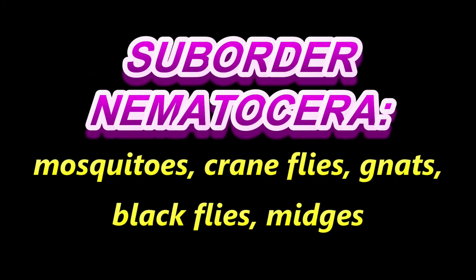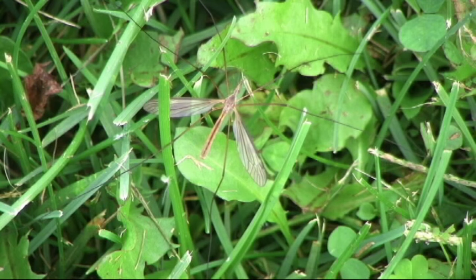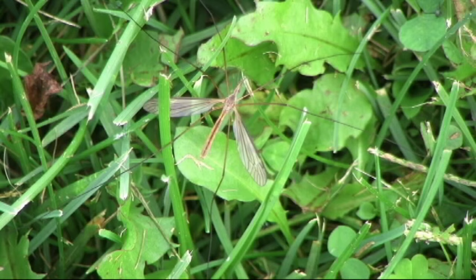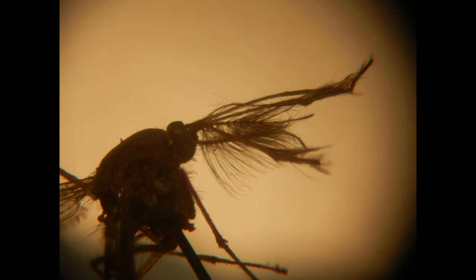There are an enormous number of flies. In fact, of all of the orders of living things, flies are among the four which have the greatest number of species. Flies have more than 150,000 species in the order Diptera.